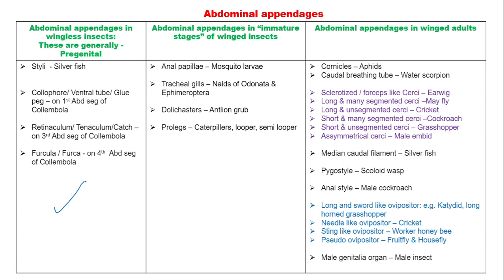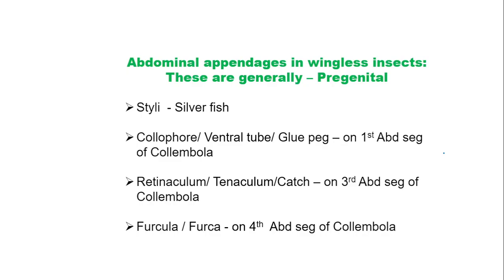This is the list for abdominal appendages in wingless insects. This is the list for abdominal appendages in immature stages of winged insects. And this is the list for abdominal appendages in winged adult insects. We are going to discuss all this list one by one in the coming slides. Let's see about abdominal appendages in wingless insects.